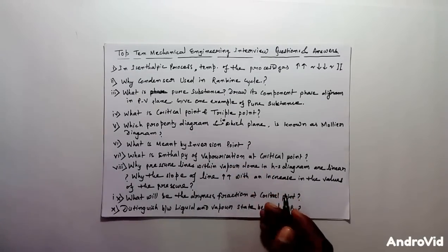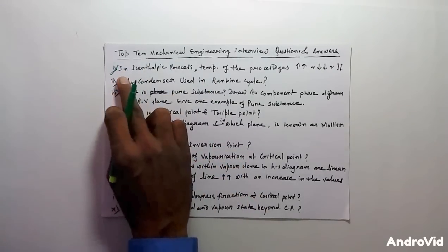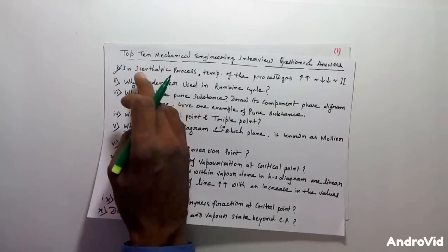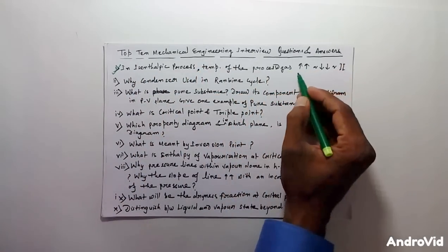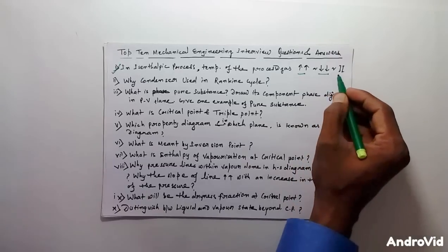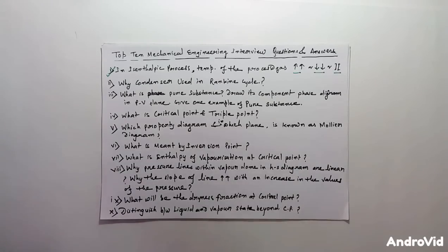Let me solve each question one by one. The first question in this list is: in an isenthalpic process, does the temperature of the processed gas increase, decrease, or remain the same? The meaning of this question is — in an isenthalpic process such as a throttling process, the enthalpy of the gas remains constant.